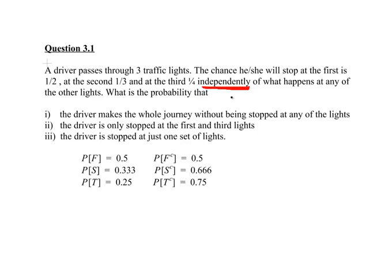The chances that he or she will be stopped at the first — I am going to call this first event F, F for first, rather than use '1st'. Second is S and T is third. I like to use very short letter names for events — good practice. The probability of F is 0.5, the probability of S is 0.33, and the probability of T is 0.25.